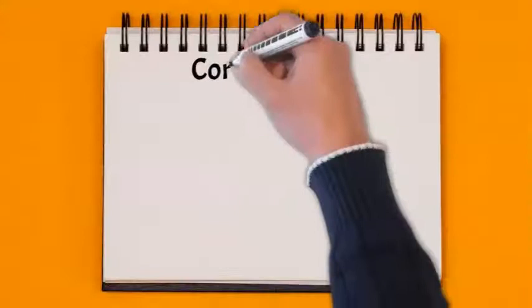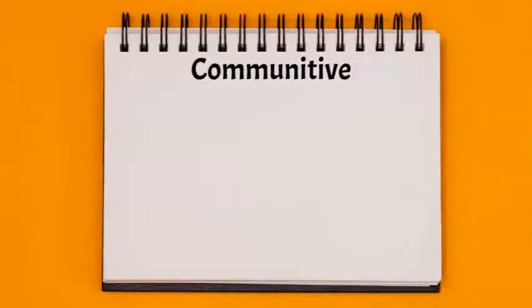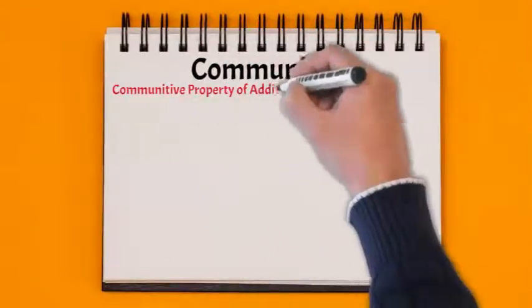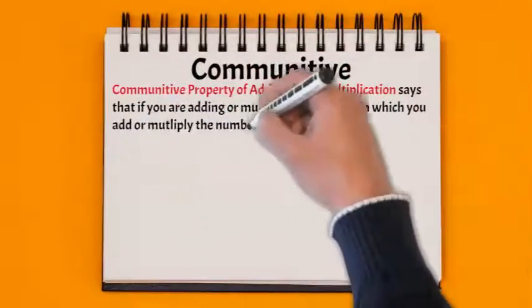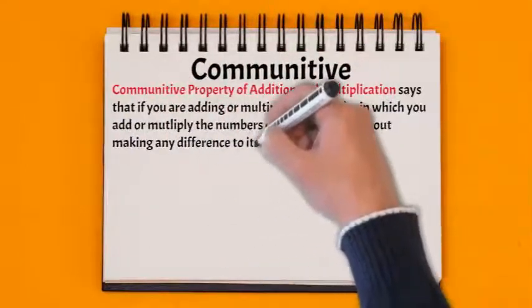We also have the commutative property. The commutative property of addition and multiplication says that if you're adding or multiplying, the order in which you add or multiply the numbers can be changed without making any difference to its answer.